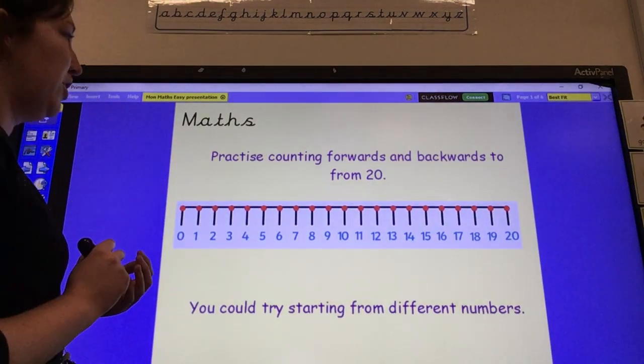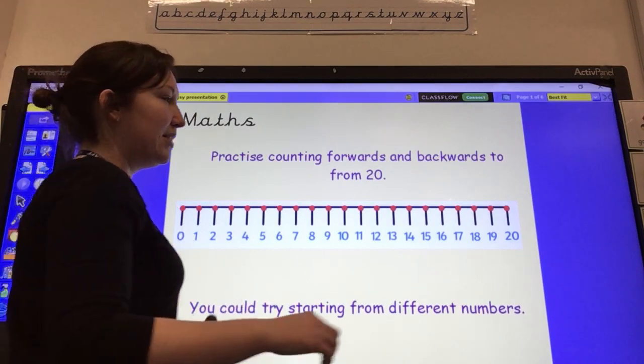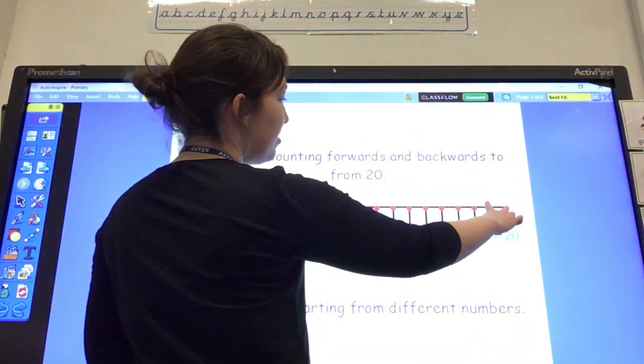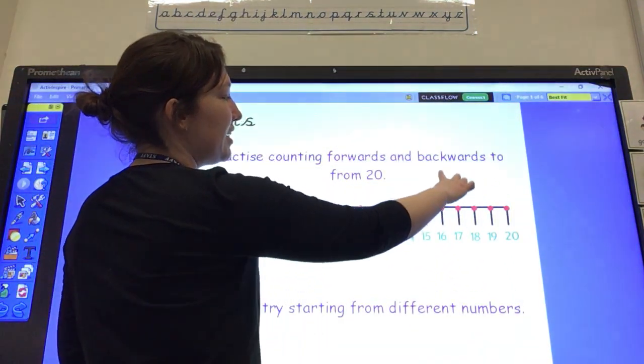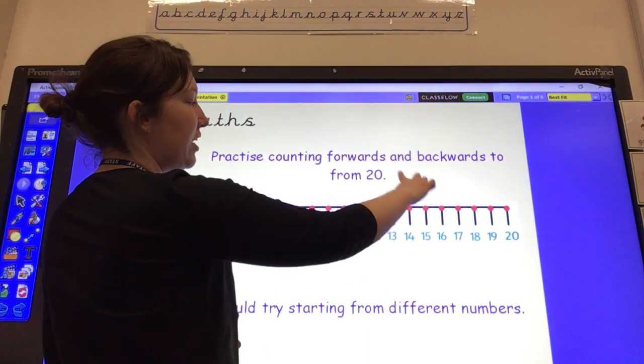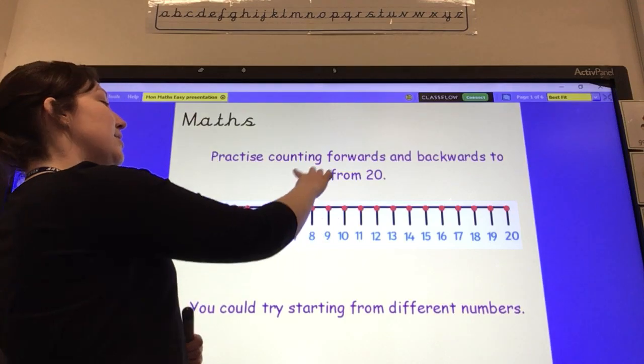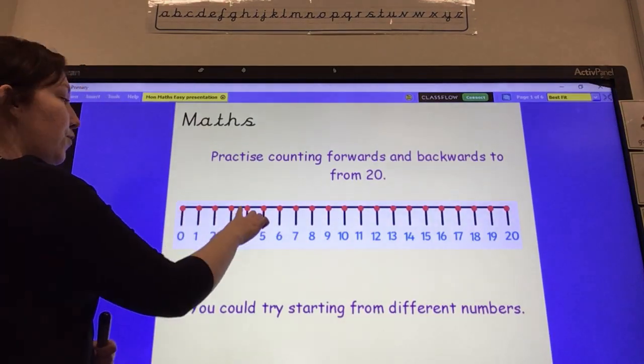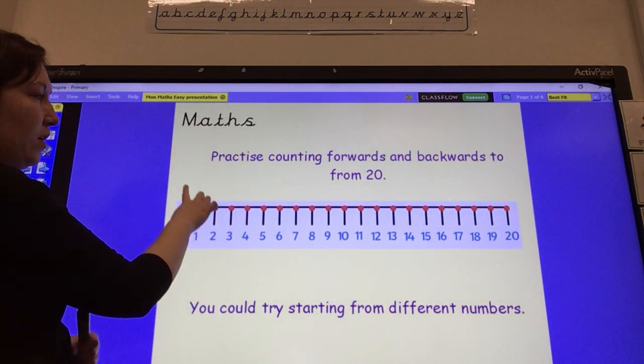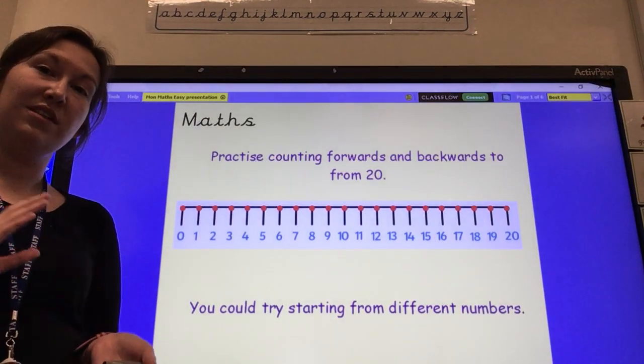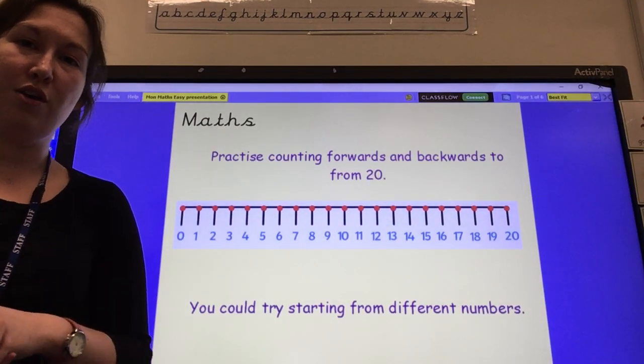Well done to everybody who did that. This time we're going to count backwards from 20 to 0. So 20, 19, 18, 17, 16, 15, 14, 13, 12, 11, 10, 9, 8, 7, 6, 5, 4, 3, 2, 1, 0. Now have a go at pausing the video and doing that on your own.